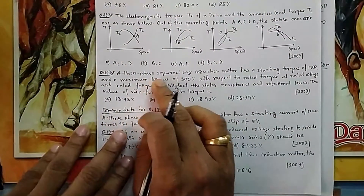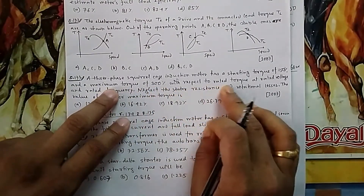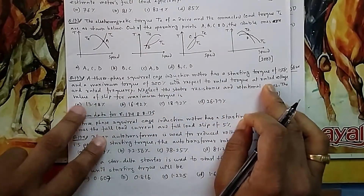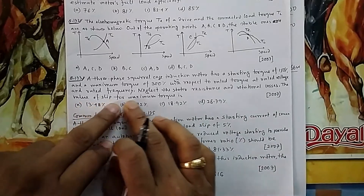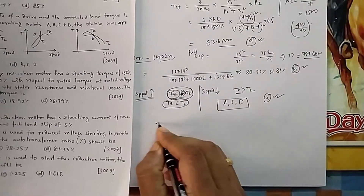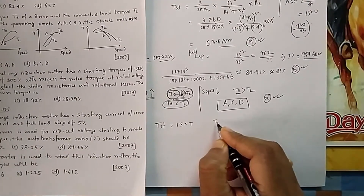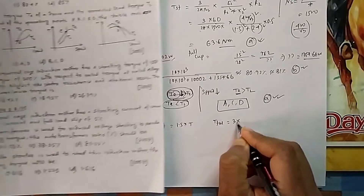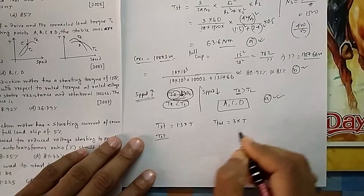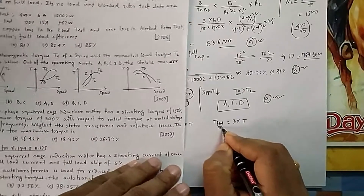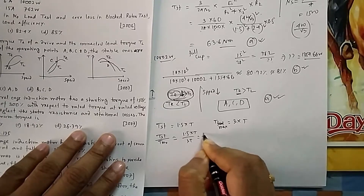Question 173: A three-phase squirrel-cage induction motor has a starting torque of 150% and a maximum torque of 300% with respect to its rated torque, at rated voltage and rated frequency. Neglect stator resistance and rotational losses. Find the slip for maximum torque. Starting torque = 1.5T, maximum torque = 3T. So starting torque / maximum torque = 1.5T / 3T = 1/2.